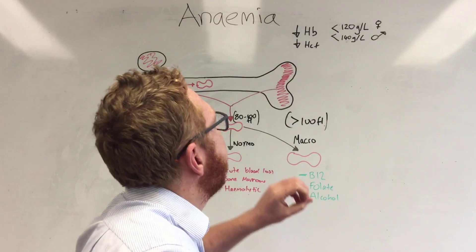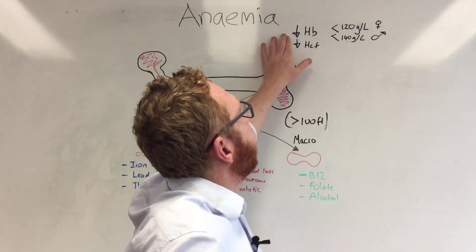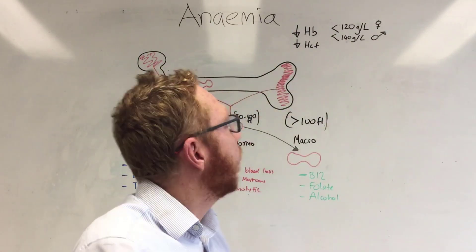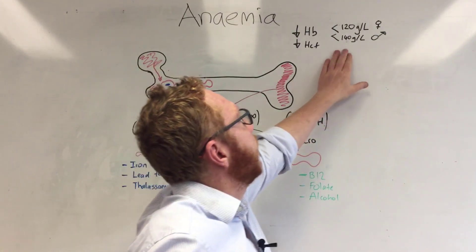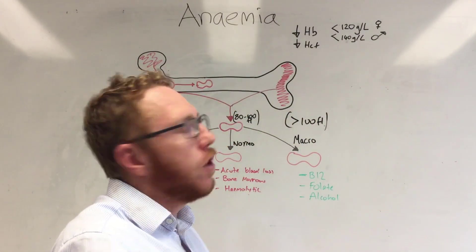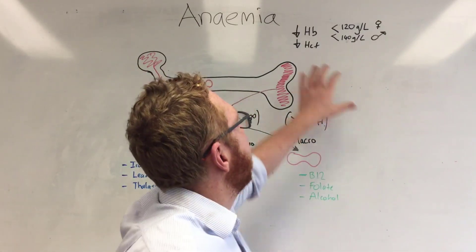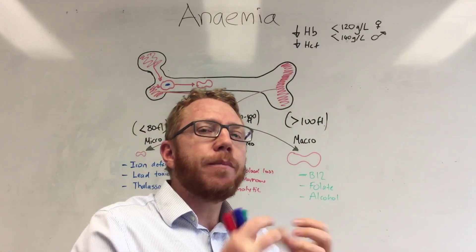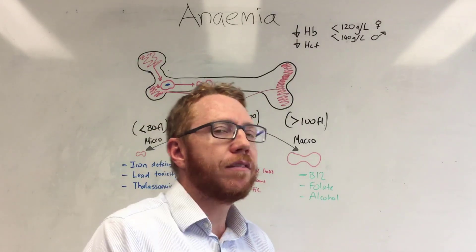Anemia is essentially defined as a reduction in hemoglobin. In females this would be less than 120 grams per litre and in males less than 140 grams per litre. You could also define anemia based on a reduction in hematocrit, which is the amount of red blood cells relative to the total blood volume.